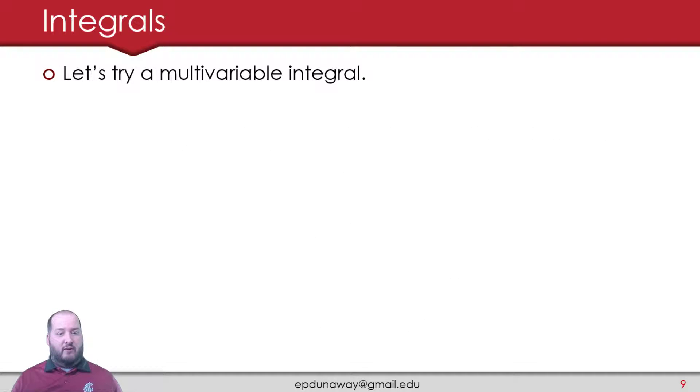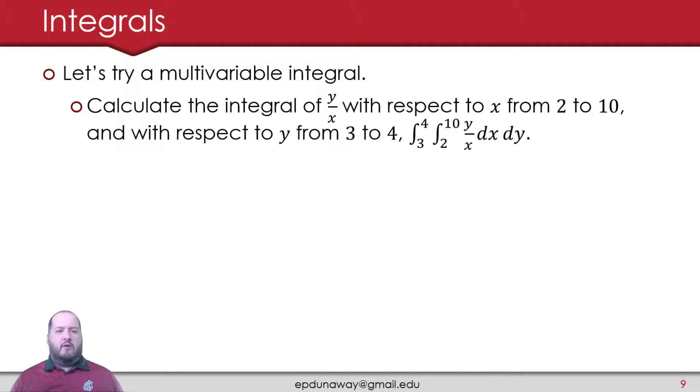Let's do a multivariable integral, because we'll deal with those too, especially in econometrics. That's where these show up quite a bit. Let's calculate the integral of y over x with respect to x from 2 to 10, and with respect to y from 3 to 4. So I have a double integral right here: the integral from 3 to 4 of the integral from 2 to 10 of y over x dx dy. I have two integrands because I have two different integrals, and I'm going to integrate this thing twice. But before we panic about this, before we see a complicated integral, know that this is still very straightforward. We're just going to use those techniques we learned in multivariable derivatives and apply them to a multivariable integral.